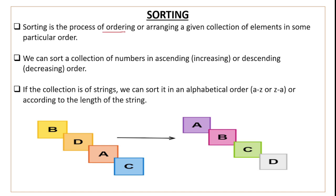Sorting is the process of ordering and arranging a given collection of elements in some particular order. It helps you with any collection — a list, array, or any sequence. If you have an unordered sequence, sorting lets you arrange it in a particular order.